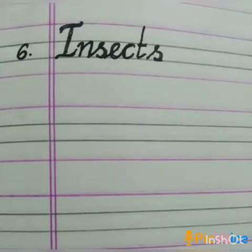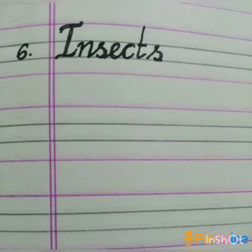Sixth one: Insects. Insects means 'chinna chinna poochigal' — small creatures like flies and ants. The spelling is I-N-S-E-C-T-S. Insects.